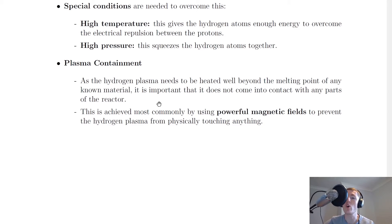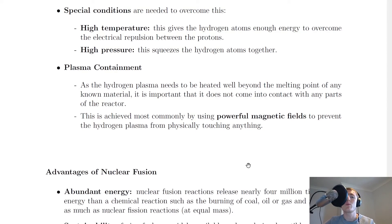So what can we do and how can we make sure the plasma is contained within the reactor and doesn't spill out? Well, we can keep the plasma contained by using powerful magnetic fields from strong superconducting magnets to prevent the hydrogen plasma from physically touching anything.